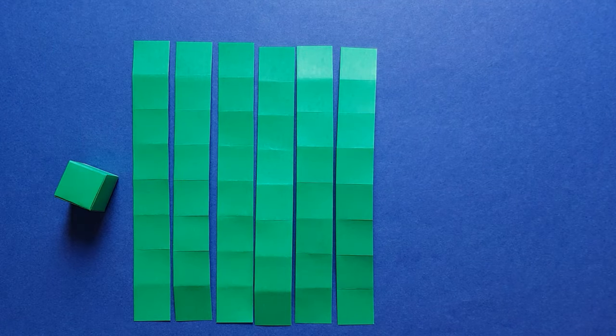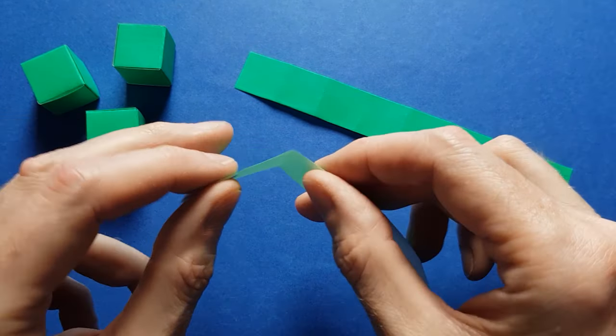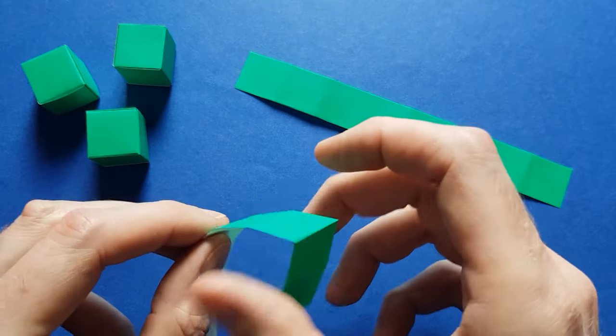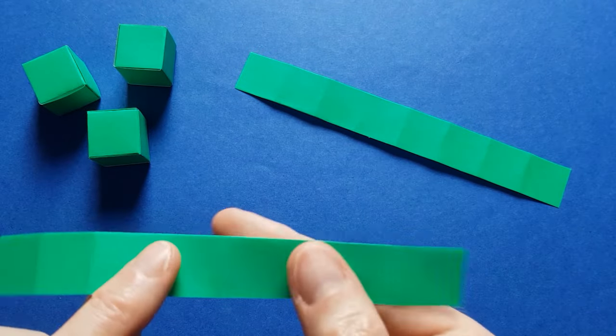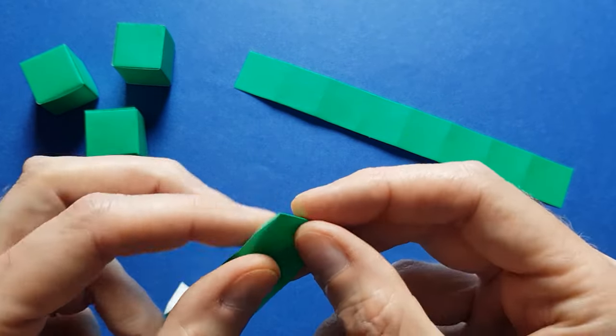With the first six strips, we can make three origami cubes. With the two remaining strips, we can make clips to join the paper cubes. And with each strip, we can make four clips by first cutting two by one strips.